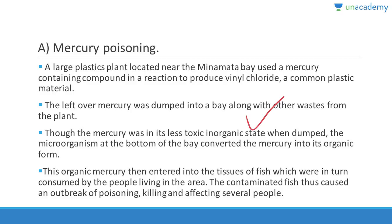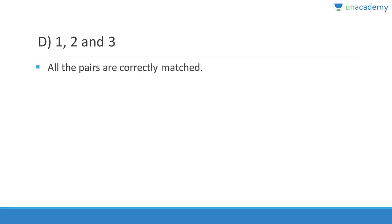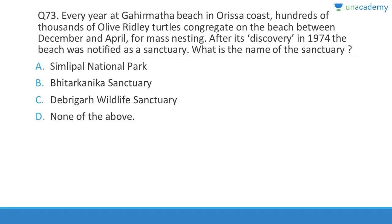Question 72: Which of the following are correctly matched — aerosol is a particle suspended in air (correct), fog is an aerosol consisting of water droplets (correct), a mixture of smoke and fog is called smog (correct). Answer is D, 1, 2, and 3.